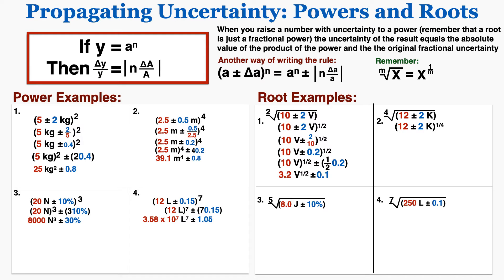That's the same as 12 plus or minus 2 raised to the power of 1 fourth, so I need to convert that to a fractional uncertainty to follow the power rule. When I do that I multiply the uncertainty by 1 fourth, raise 12 to the power of 1 fourth, and this is the answer that I get.